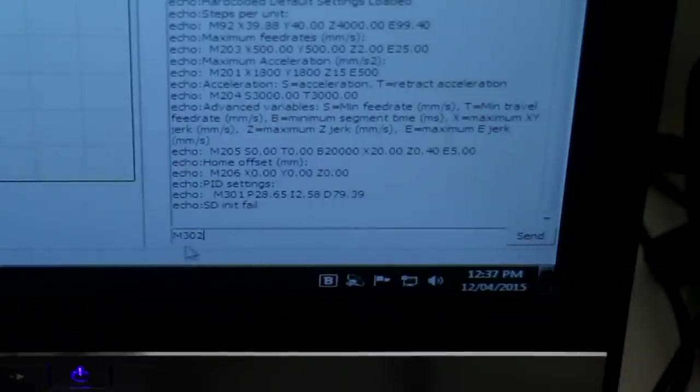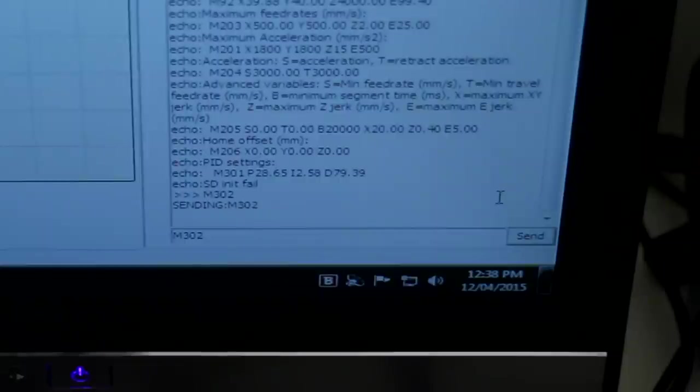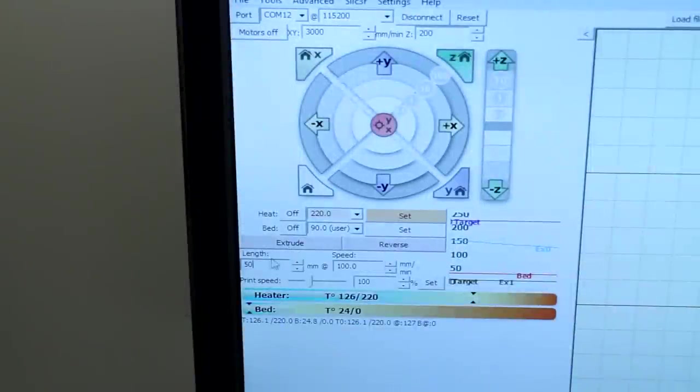Type the g-code command M302 and hit send. That will allow the cold extrusion feature to apply, otherwise you won't be able to extrude without the hot end being on. Extrude 50 mm of filament.